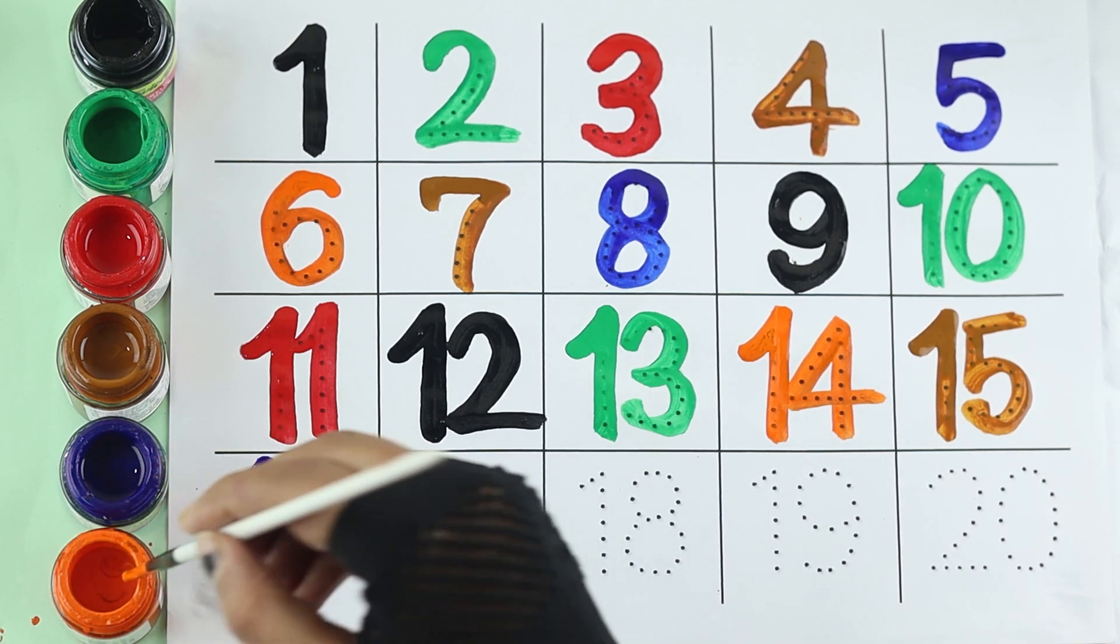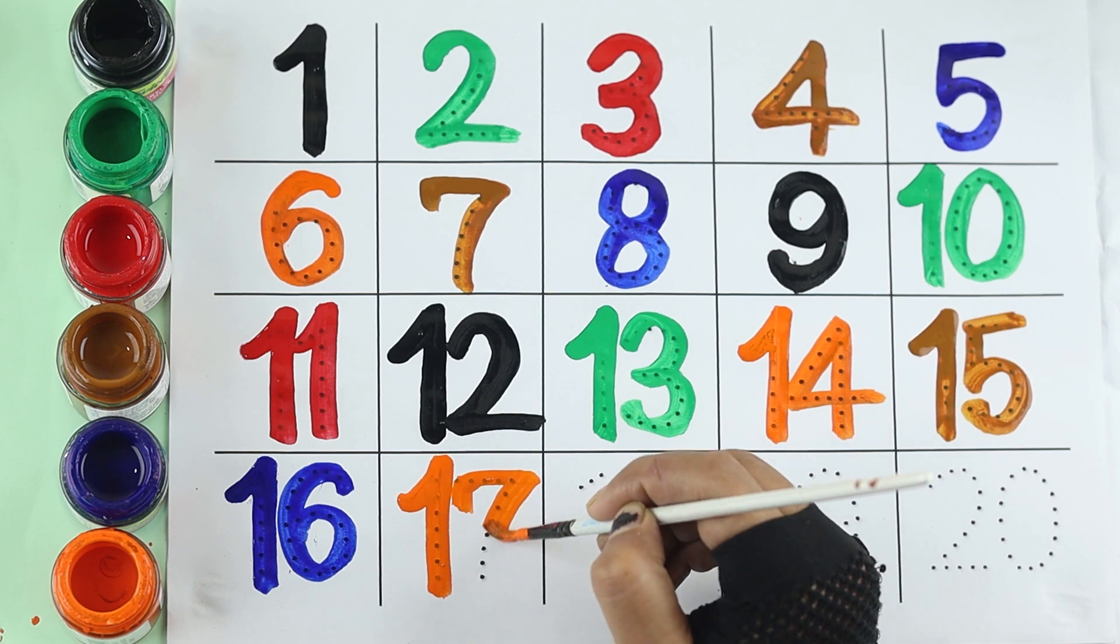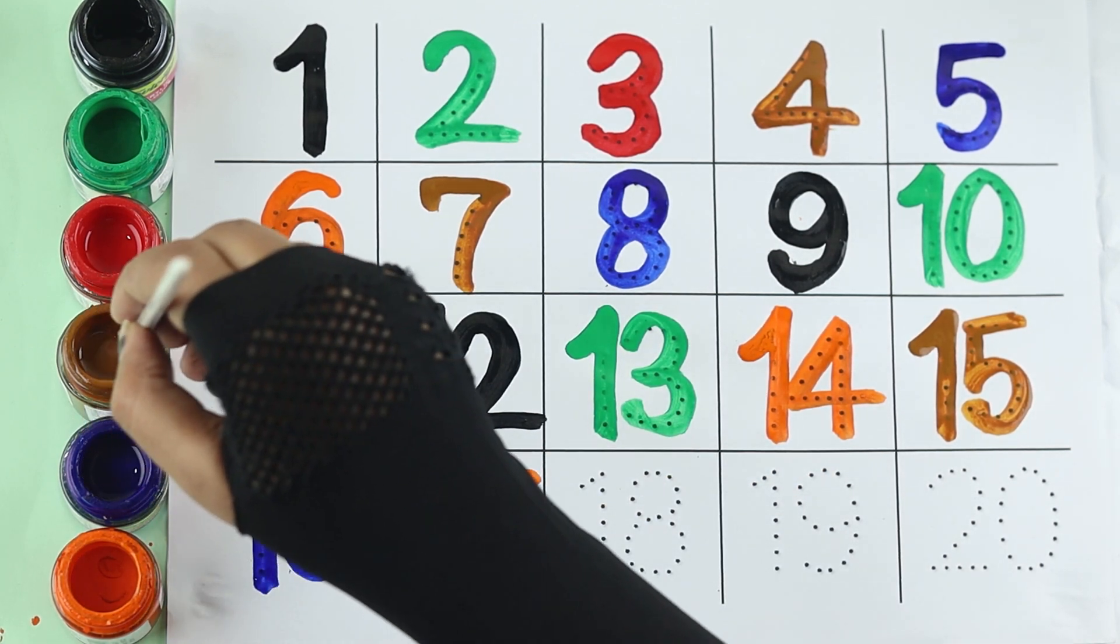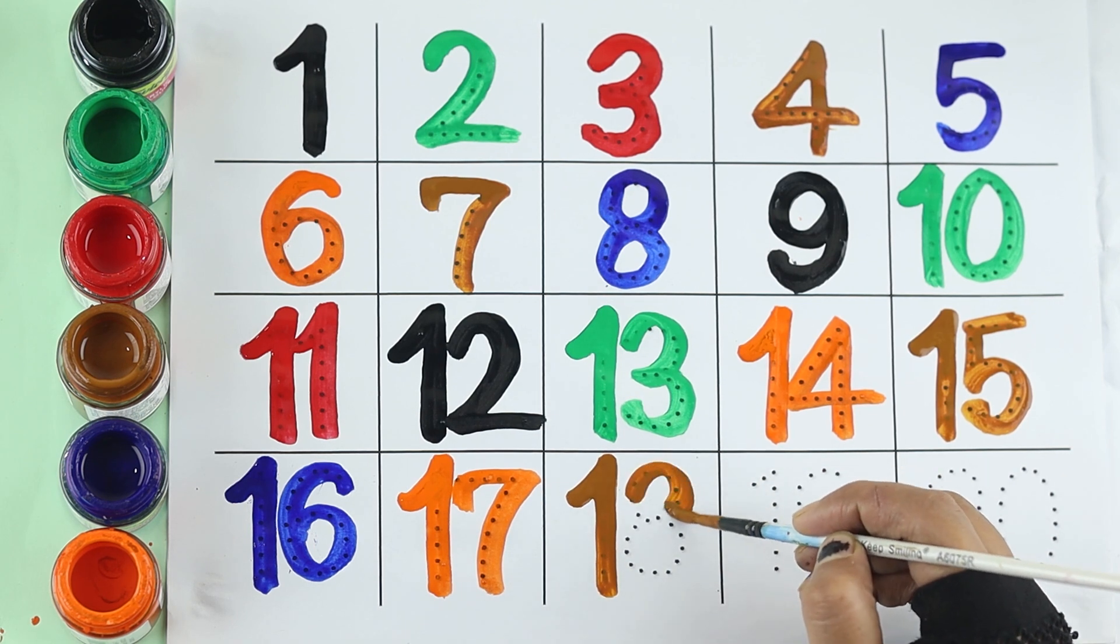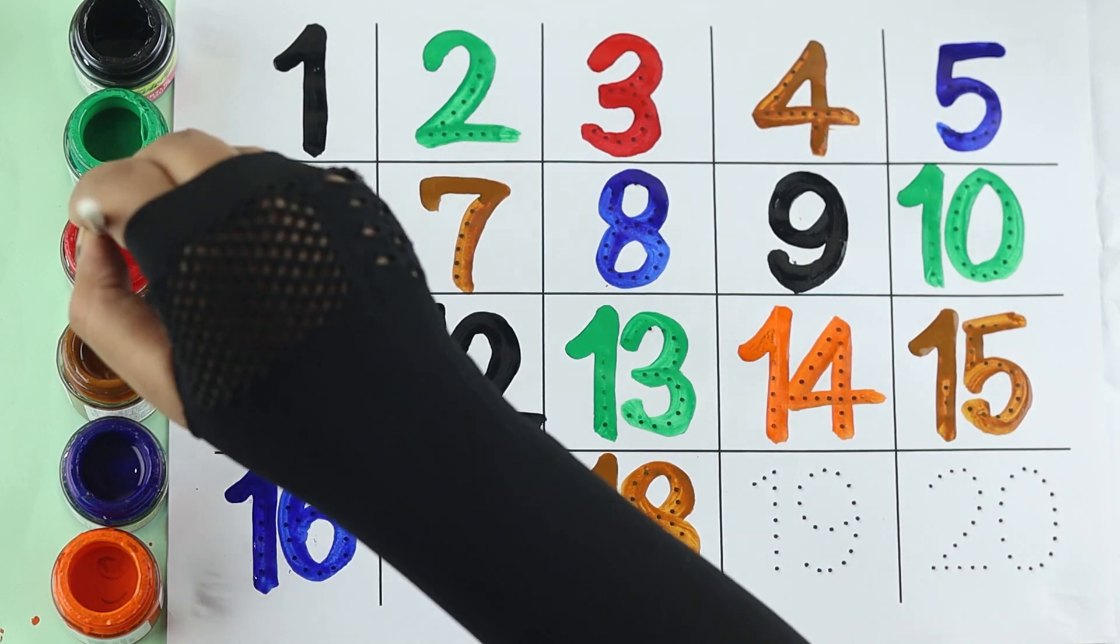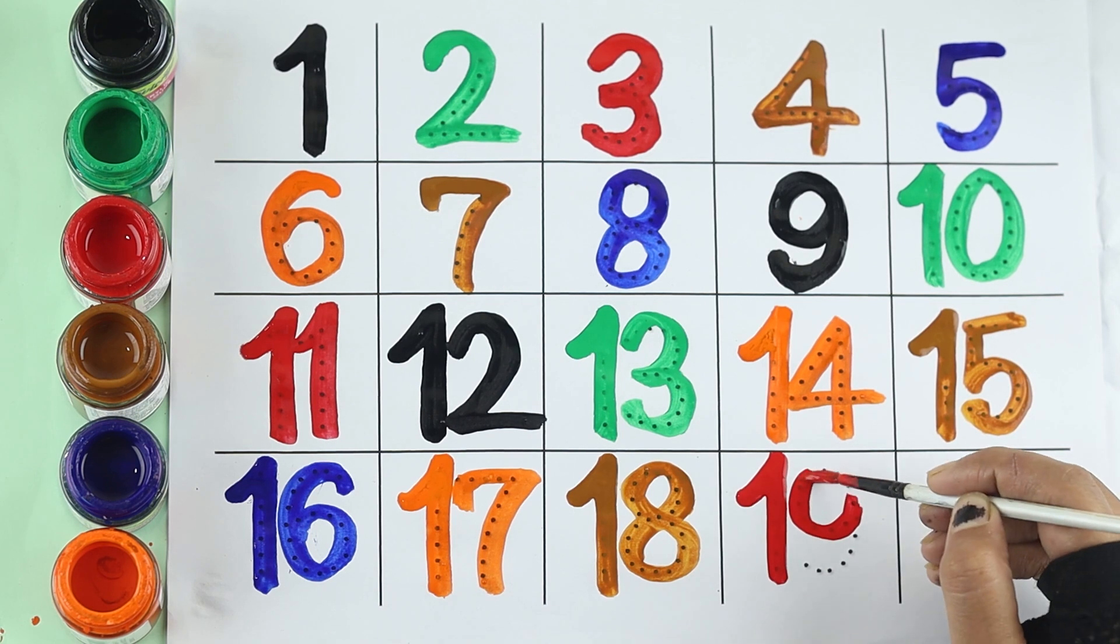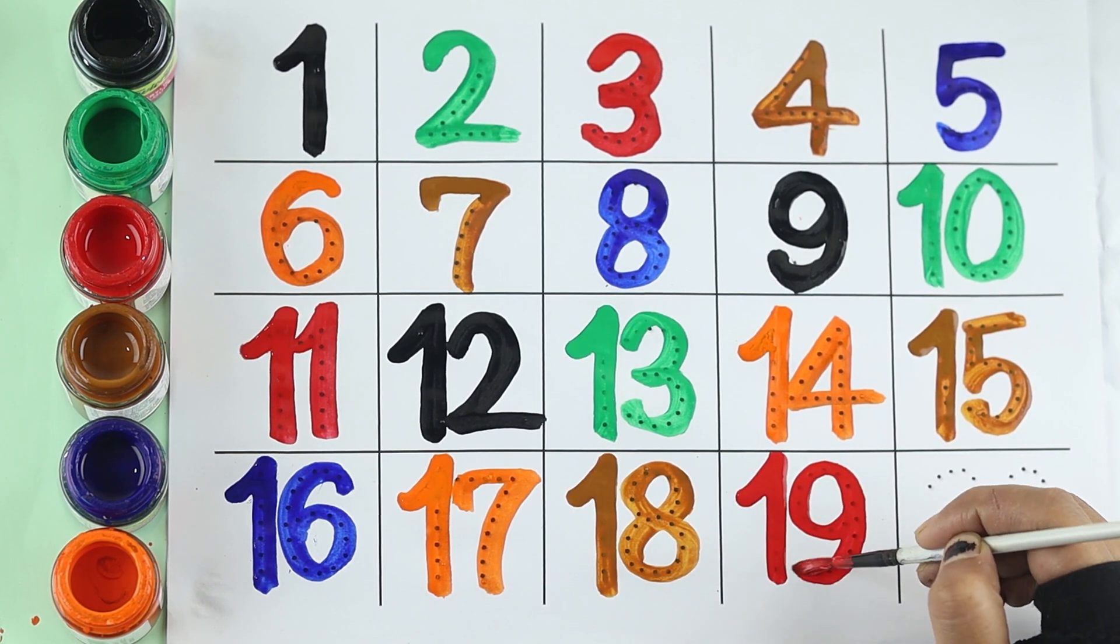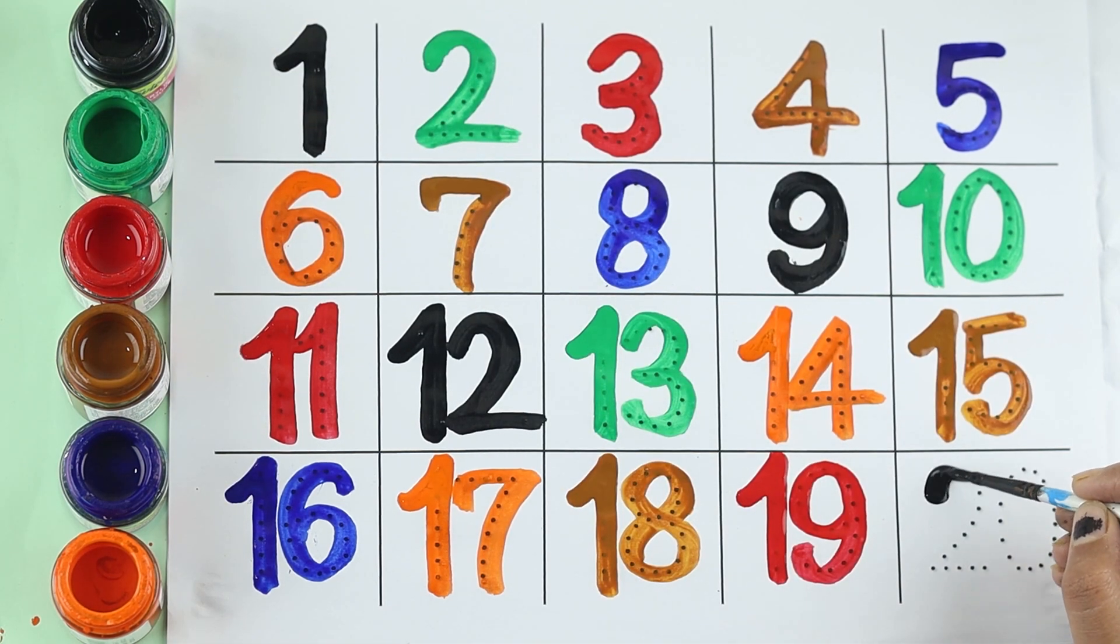Orange color, twelve. Seventeen brown color, eighteen red color, nineteen black color, twenty.